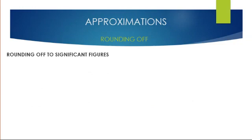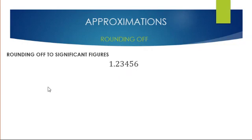Now let's look at how we can round off numbers to significant figures. Let's say we have the number 1.23456. We can round off this number to a specified number of significant figures. If we count, this number has 6 significant figures.